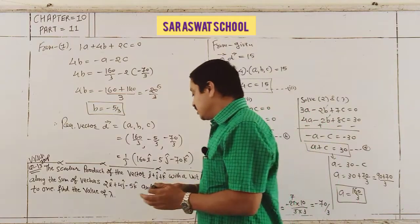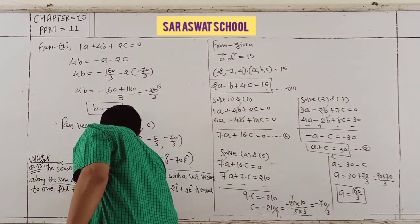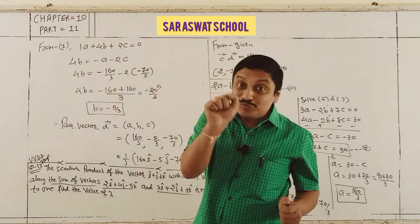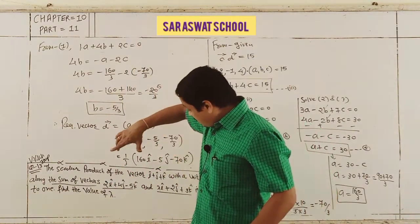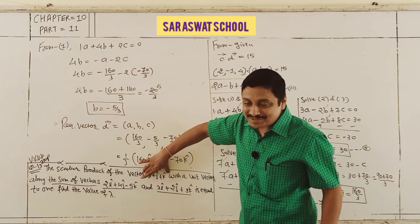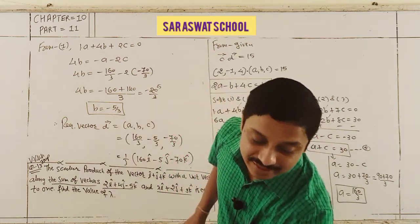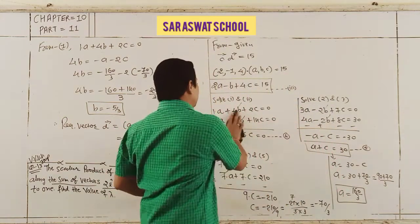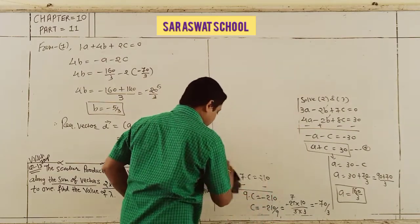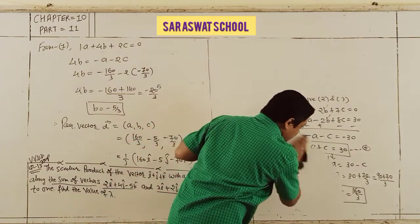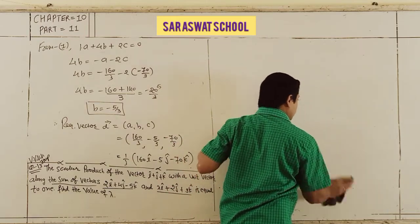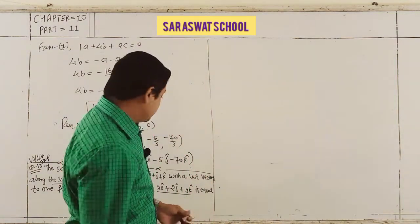First, I'll find the sum of the two vectors — that resultant vector — then derive its unit vector, and after that make the dot product with i + j + k to find λ.